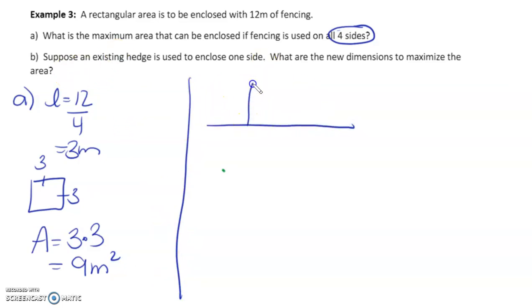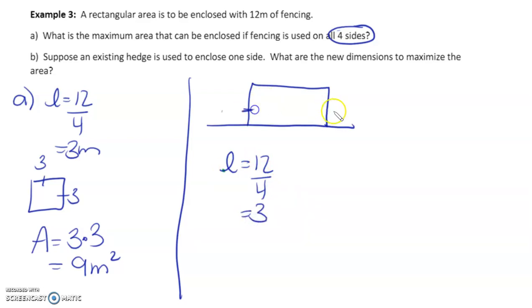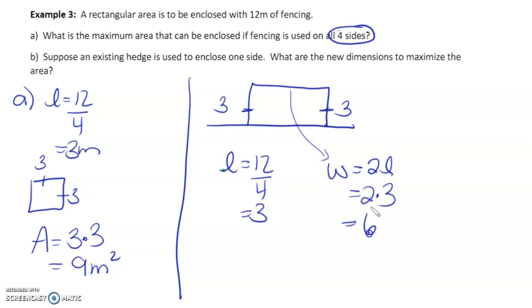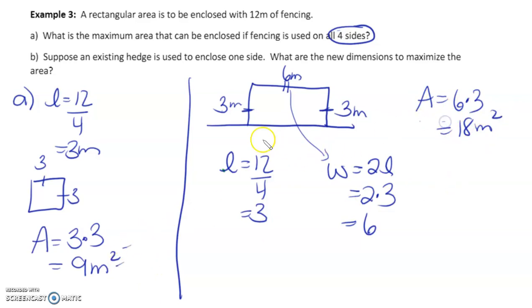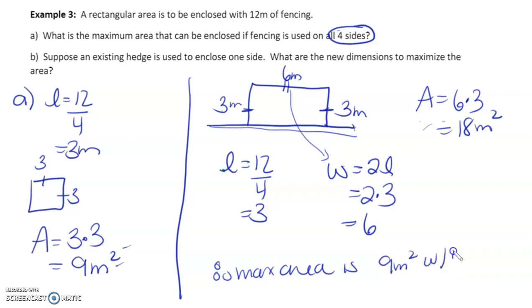Part b — suppose an existing hedge encloses one side. We still get the width as 12 ÷ 4 = 3 meters, so the two shorter sides are each 3 meters. The length is 2 times the width: 2 × 3 = 6 meters. The area is 6 × 3 = 18 meters squared. Comparing the two: maximum area with 4 sides is 9 meters squared, and with 3 sides is 18 meters squared — just by using an existing hedge, you can double the enclosed area.